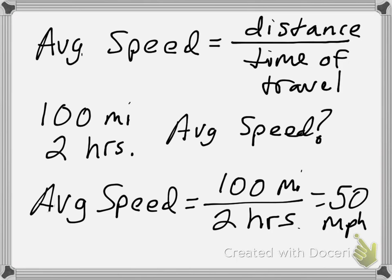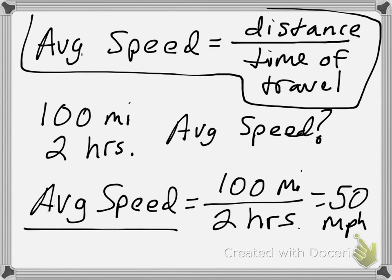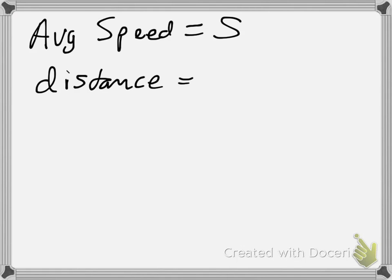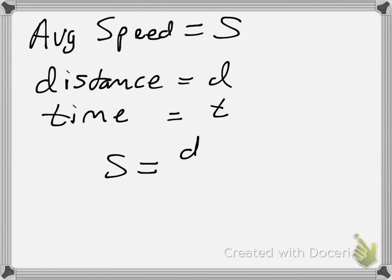One of the things we like to do is instead of writing out these long words — this is a bit of a clumsy equation — we compact everything down into symbols. So let's let average speed equal S, distance equal D, and time of travel equal T. We can write this much more compactly as S equals D over T. Here's our formula for average speed.